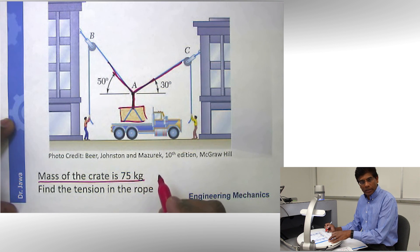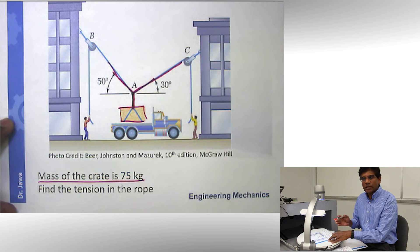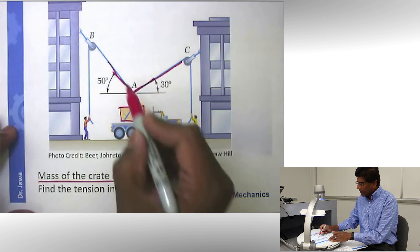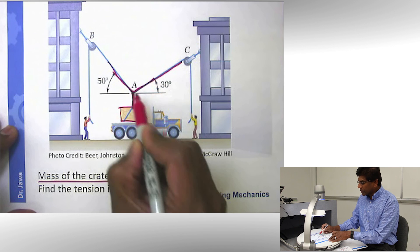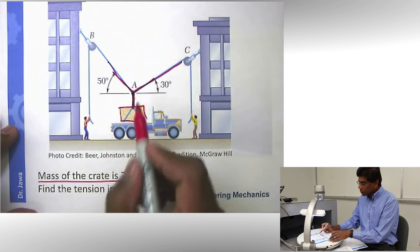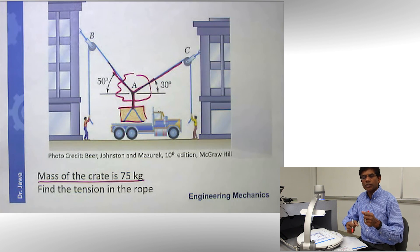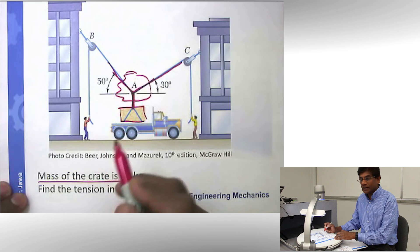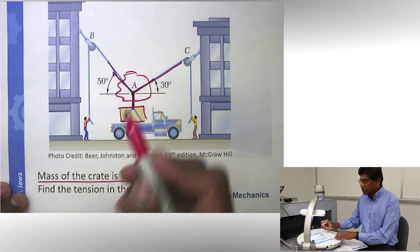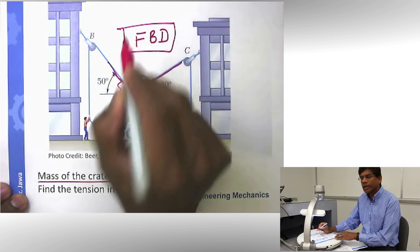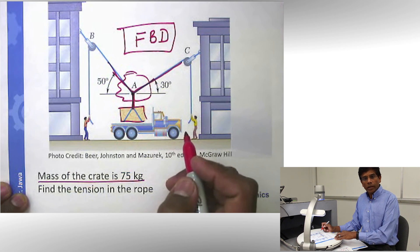So how do we solve this problem? I would like you to follow a step-by-step process. This is very important because if you adapt a step-by-step approach you can solve any complex problem easily. The first step is identifying the area of interest. We have three cables that are concurrent because they intersect at point A. So my interest is this area where all three cables come together. I'm going to isolate this area — a process known as drawing a free body diagram, or FBD. You are going to hear this word again and again in this class.